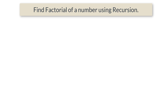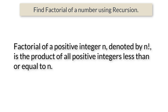Let's write a C program to find the factorial of a user-entered positive integer using a recursive function. Factorial of a positive integer n, denoted by n!, is the product of all positive integers less than or equal to n. For example, 5 factorial is 5 × 4 × 3 × 2 × 1, which equals 120.